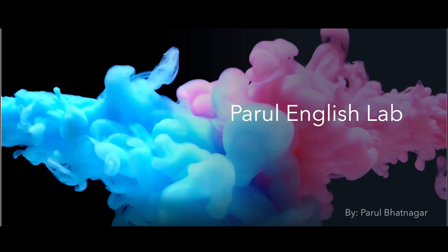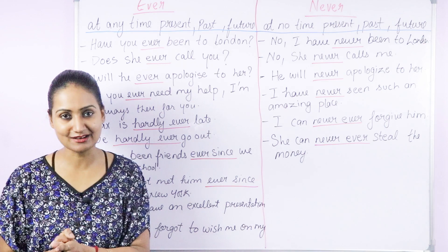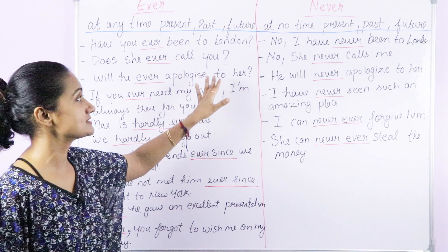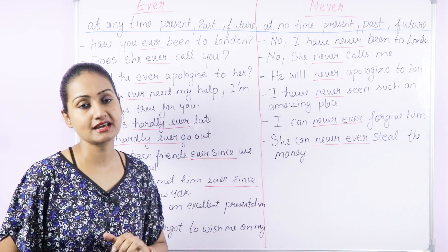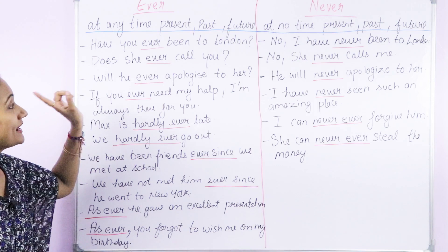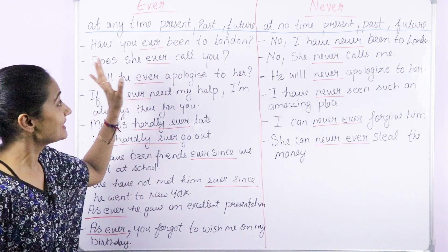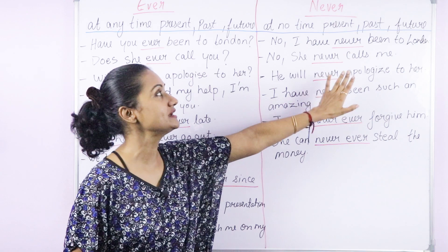First let's understand ever and never. Ever means at any time — in present, past, and future — and never means at no time in present, past, and future. For example: Have you ever been to London? Here we are talking about the past — at any time in the past, have you been to London? No. I have never been to London — at no time in the past have I been to London.